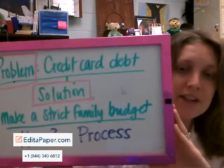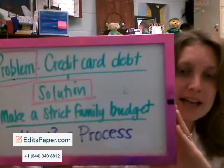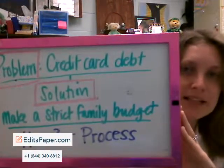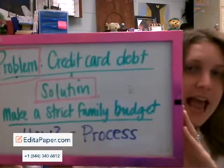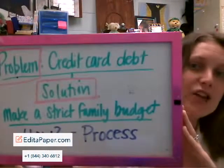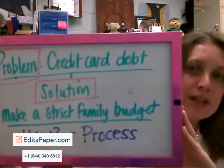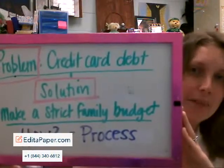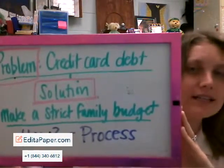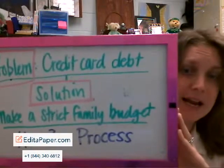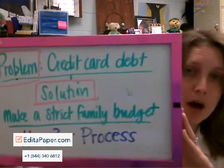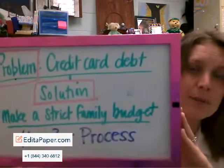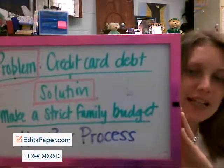You identify the problem — which again is credit card debt — and one of my solutions is to make a strict family budget. Your elaboration throughout your paper is going to be the process: how will that happen? Step one, step two, step three, and so on. You're going to complement that with research and of course apply the proper citations.